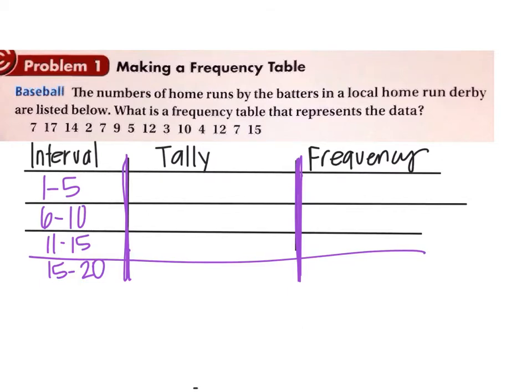Okay, so what you do in the tally column is you take your number like 7, and that goes between 6 and 10, and 17 goes between 15 and 20, and 14 goes between 11 and 15. So you just tally them up, and you put a tally every time one of the numbers shows up in that interval.